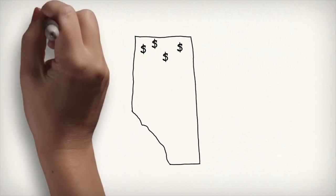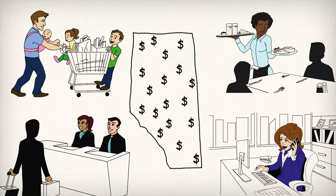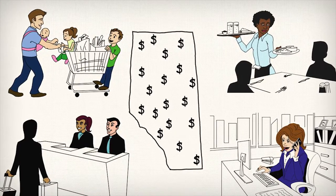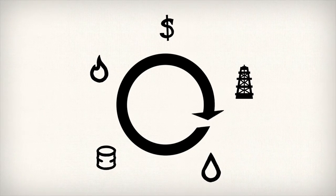Ideally, companies will invest that capital back in Alberta, because that translates into lots of jobs and money for Alberta families. As a result of that investment in drilling, more oil and gas is produced, and the cycle starts all over again.